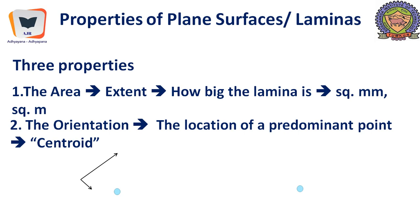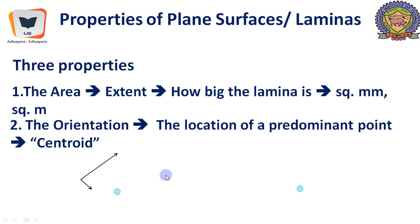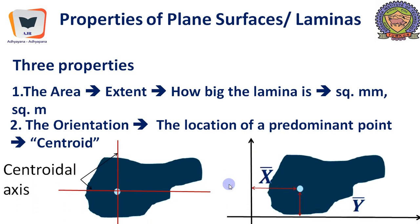Plane surfaces, laminas, or cross sections come with three important properties. The first property is area, expressed in square millimeters or square meters. It represents the extent of the surface — how big the plane surface or lamina is. The bigger the lamina, the more will be the area. The second property is orientation — where exactly the important point over the plane surface is located with respect to some reference axis.